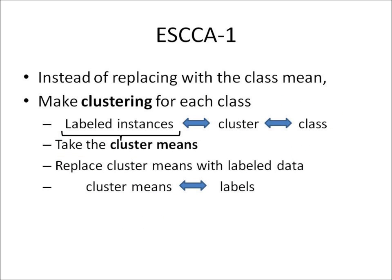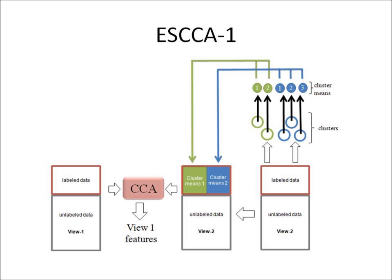The first modification that we propose is as follows. Instead of replacing the labeled instances with their class means, we first perform clustering. Then, for each cluster obtained, we take the means of the instances and find cluster means. At last, we proceed like CCA — we simply replace the labeled instances with their corresponding cluster means. The following figure might help you to see the differences between CCA and ESCCA.